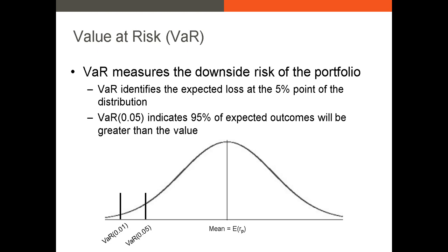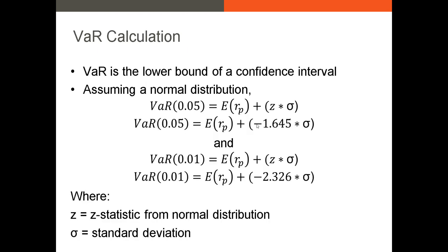Let's talk about the calculation of VAR, and then I'll go through an example. The way we calculate VAR is by assuming that the VAR is the lower bound of a confidence interval. If you remember your statistics, the way we calculate the upper and lower bounds of a confidence interval is we first identify the mean or the expected return, and then we add to that the Z statistic times the standard deviation, or sometimes we might use the T statistic for a sample.